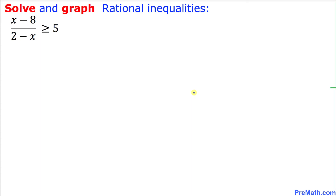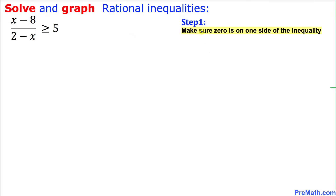Welcome to Pre-Math. In this step-by-step video tutorial we are going to solve and graph this given rational inequality. Here is our very first step: make sure that zero is on one side of the inequality. That means we want to make a zero on the right-hand side, so we are going to move this 5 to the left-hand side.